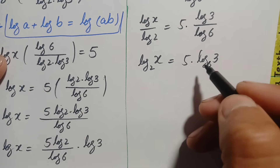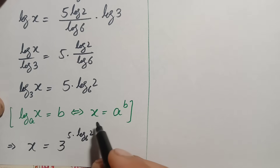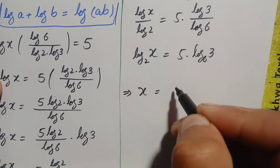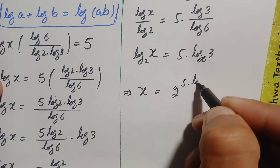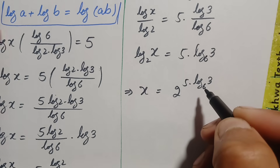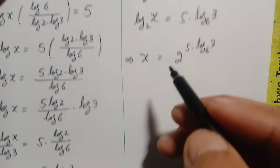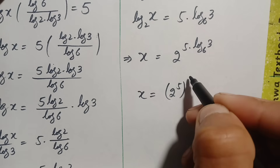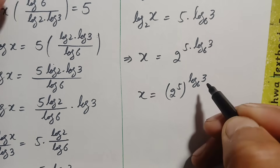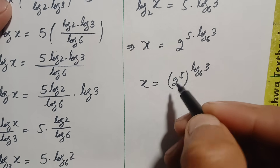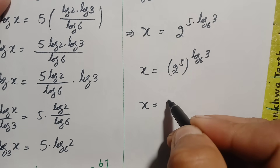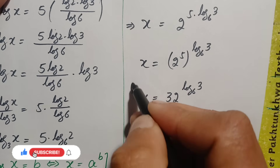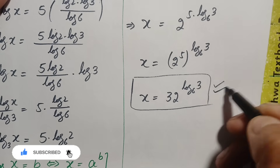We convert from logarithm form to exponential form using the same identity. The equation becomes x is equal to 2 raised to power (5 times log of 3 with base 6). Applying the exponential identity again, this is (2 raised to power 5) raised to power (log of 3 with base 6). Since 2 raised to power 5 equals 32, we get x equals 32 raised to power log of 3 with base 6. This is our answer using the second approach.